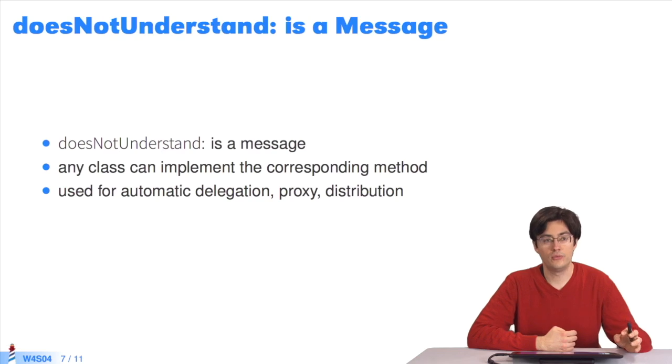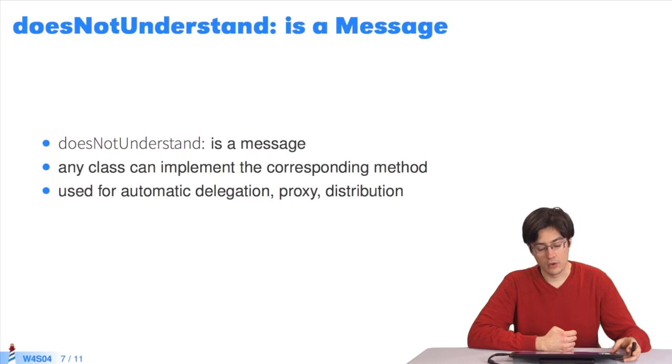doesNotUnderstand is a message like any other. Therefore, you can implement a DNU method to be executed whenever an instance does not understand a message. This mechanism is used in certain complicated cases, like proxies and automatic delegation, when you want a certain object to transmit all the messages it gets to another object. The doesNotUnderstand mechanism can be used for that.